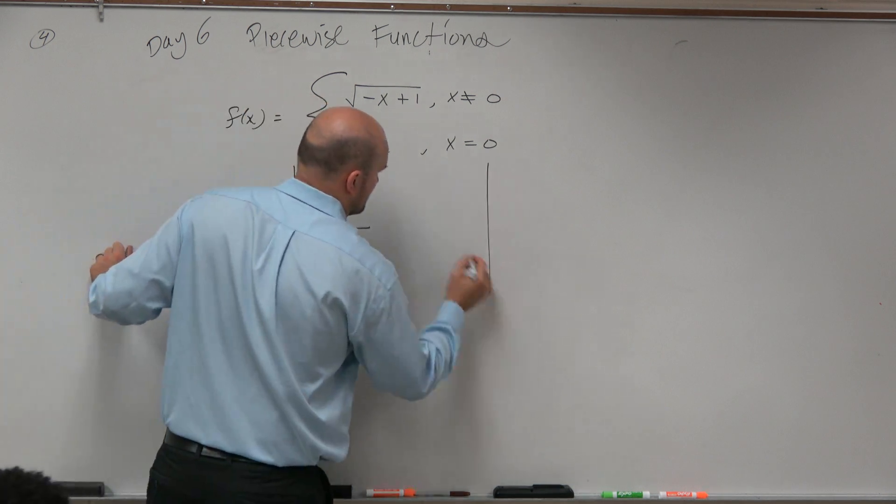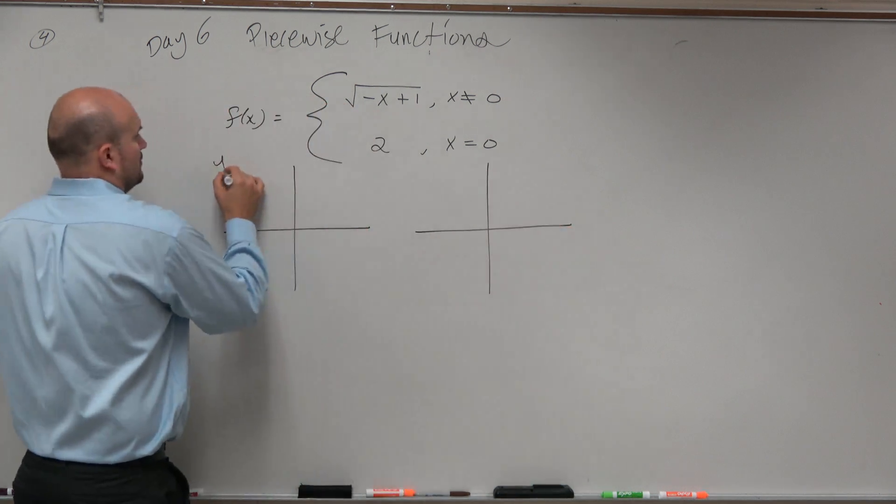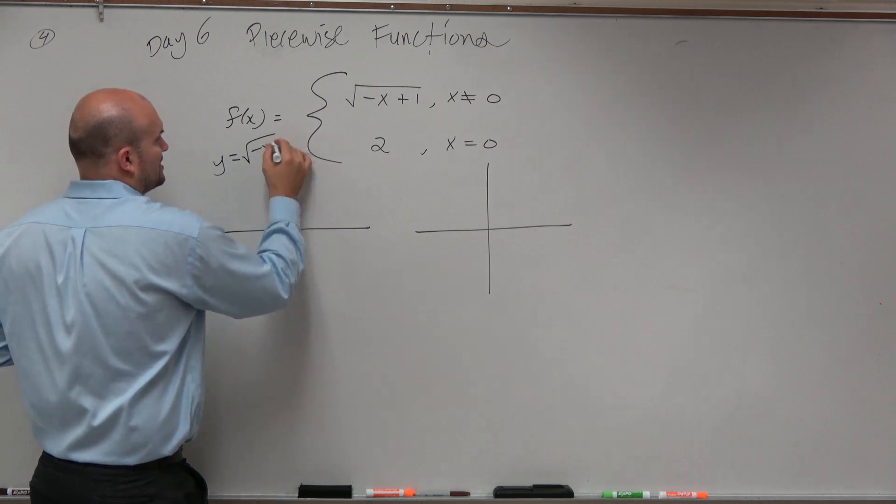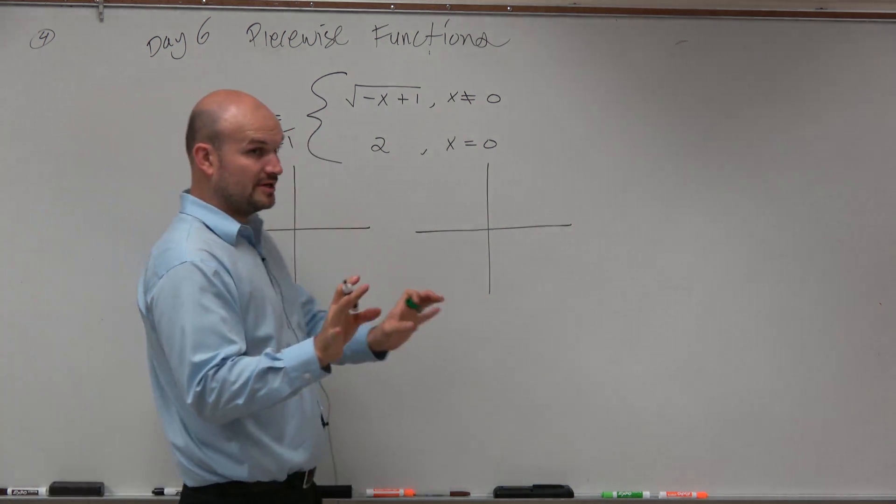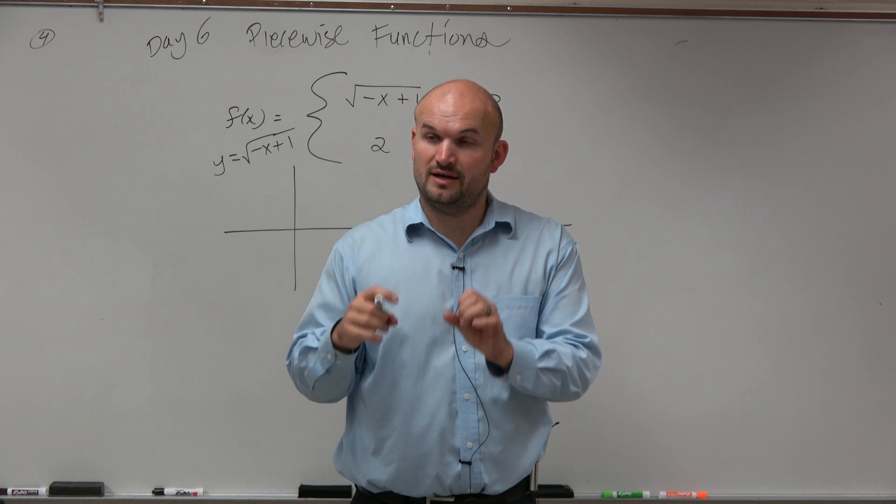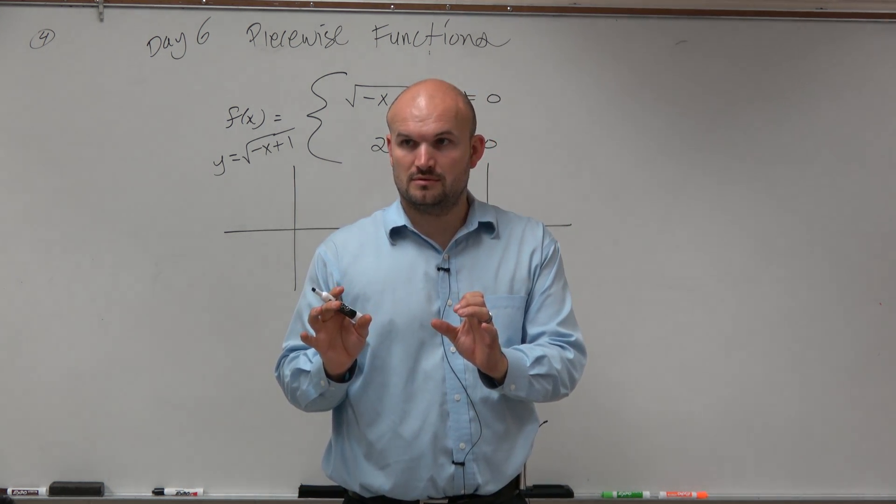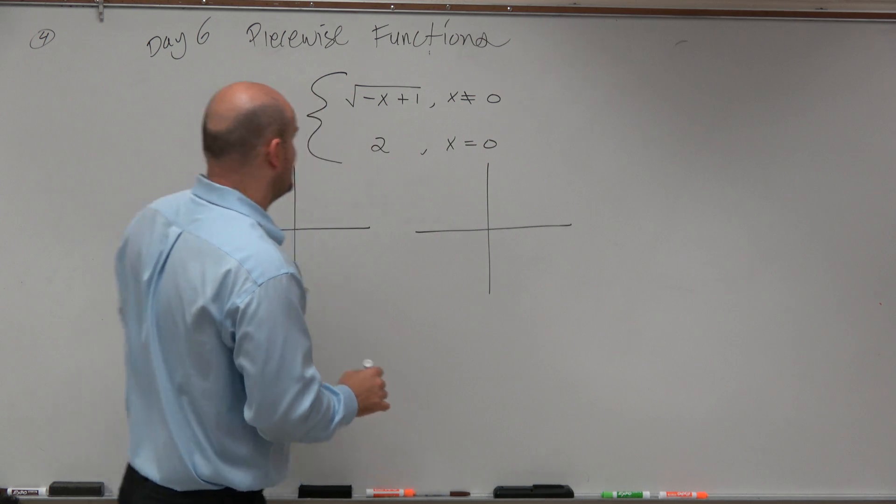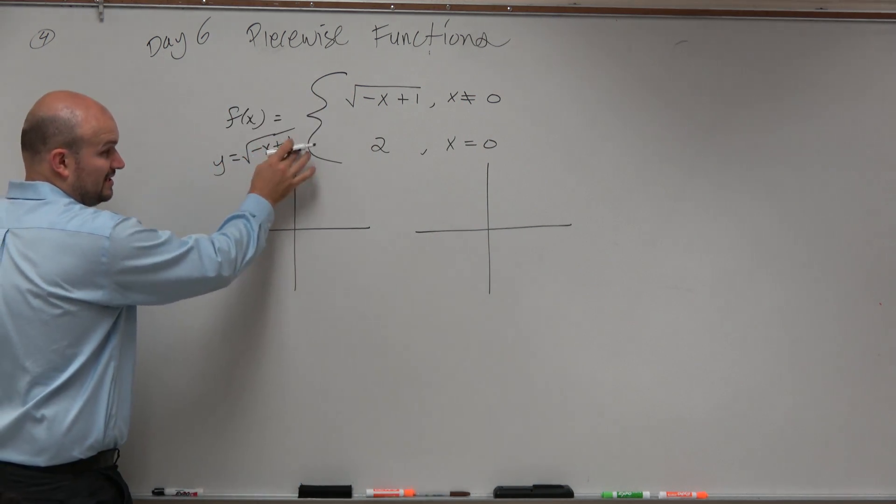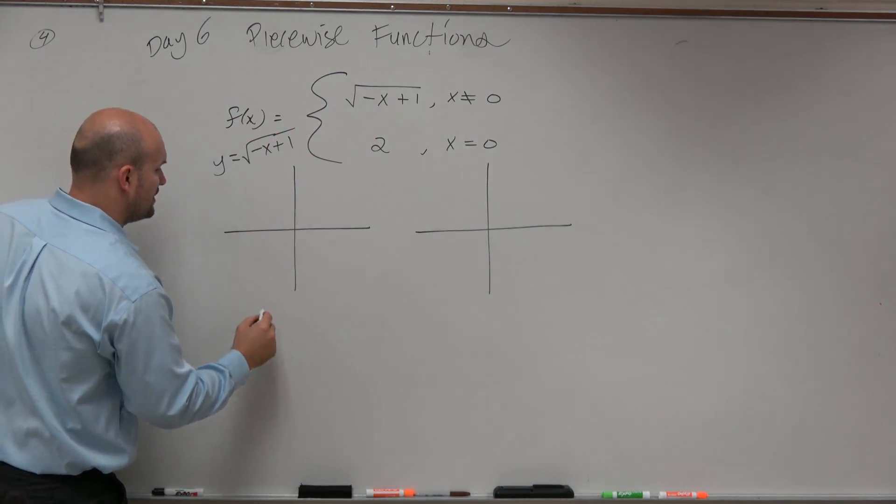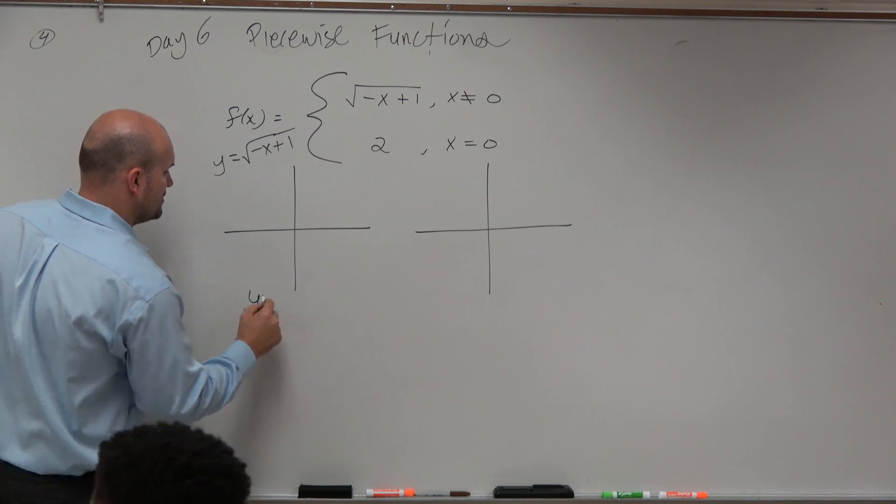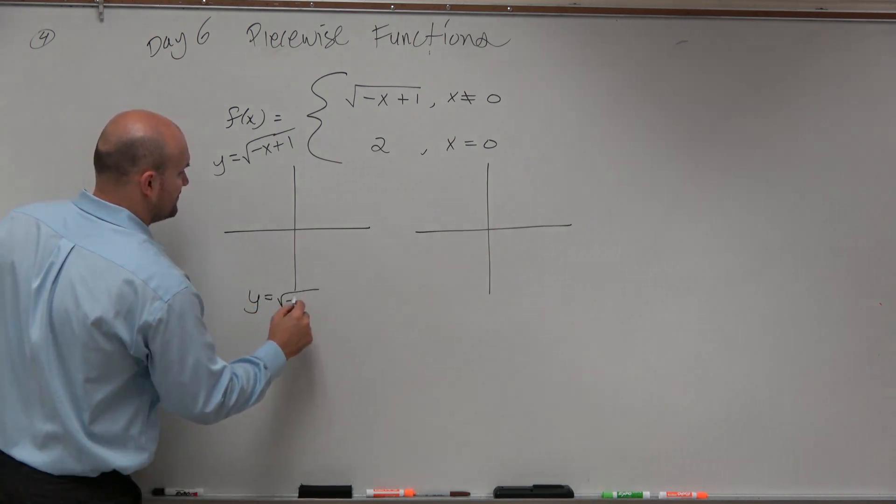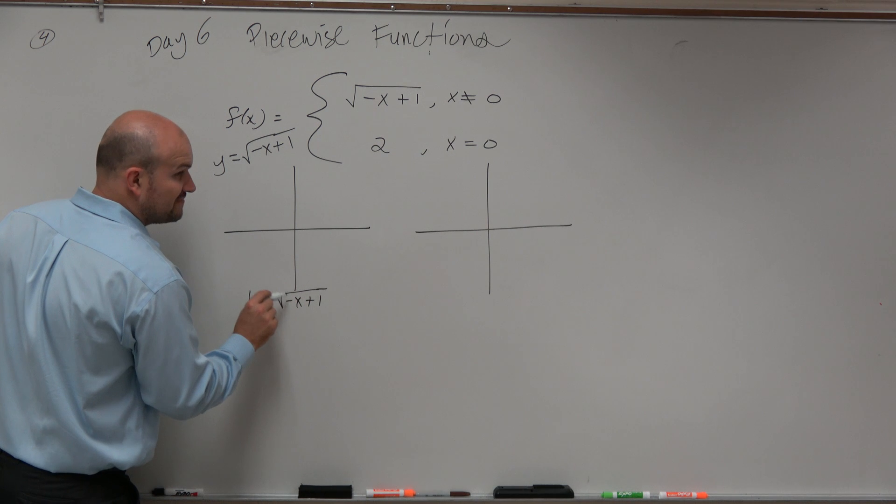Okay, we've got two functions here. y equals square root of negative x plus 1. Last class period, what did we learn? We learned that when we have a function, we want to make sure we write it in this form. We have a b and an h here, right? So, what we want to do is rewrite this. y equals the square root of negative x plus 1. We have to factor out that b.